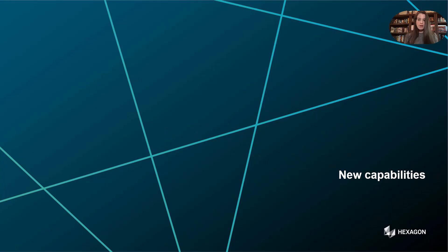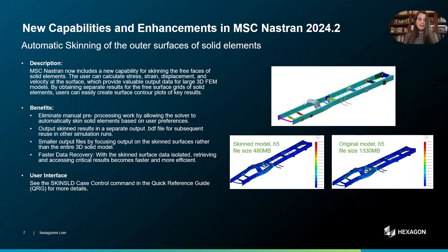Let's start by exploring the new capabilities introduced in MSC Nastran 2024.2. MSC Nastran 2024.2 introduces automatic skinning of the outer surfaces of solid elements, enabling users to calculate stresses, strains, displacements, and velocities directly on the surface. This eliminates manual preprocessing, reduces output file sizes by focusing on skinned surfaces, and speeds up data recovery for large 3D models. Results are output in a separate PDF file for reuse in other simulations.